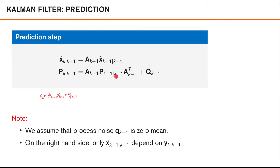So this is the linear Gaussian process model. We also assumed that the posterior from the previous time instance is a Gaussian density — the posterior from the previous time instance, given all the measurements up to k-1, is a Gaussian density of x_{k-1} with mean x-hat_{k-1} given k-1 and covariance P_{k-1} given k-1. Putting these things together, we can derive the mean of the predicted density. By definition, the mean of the predicted density is the expected value of x_k given measurements up to k-1.